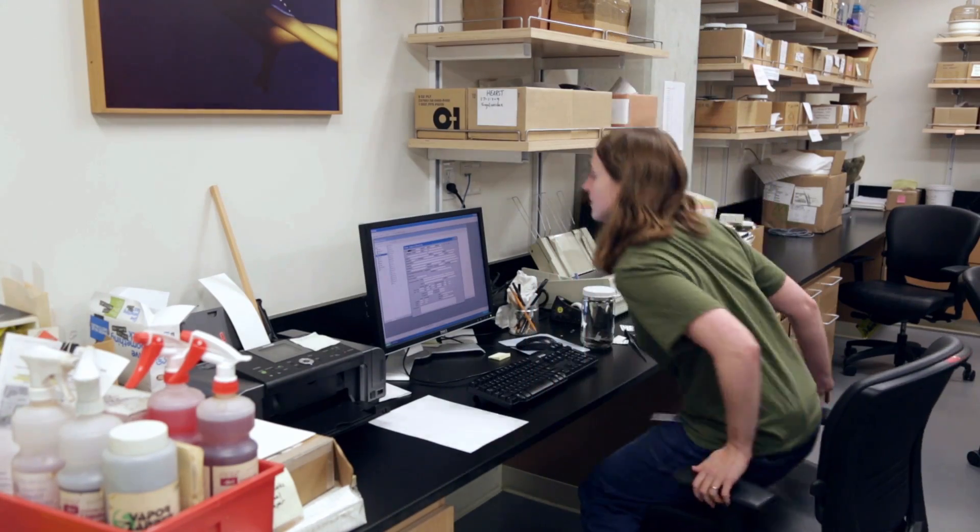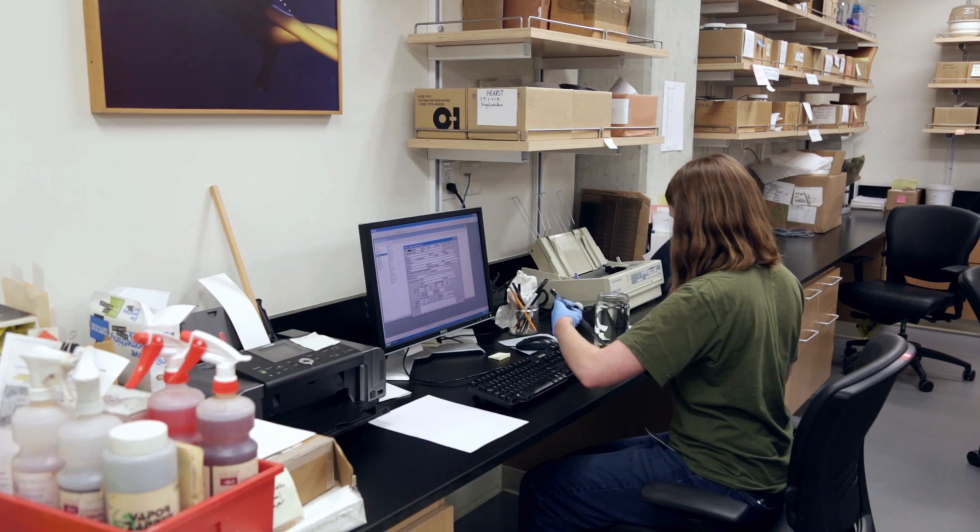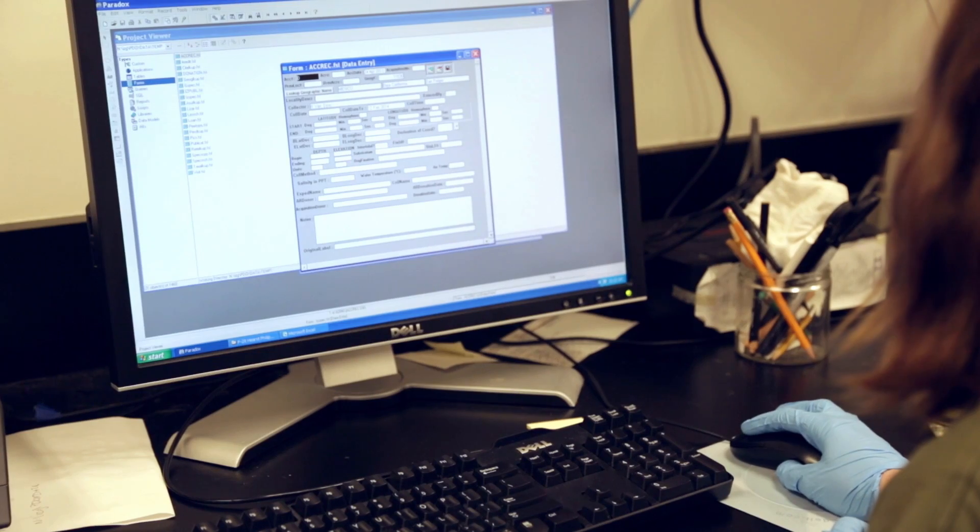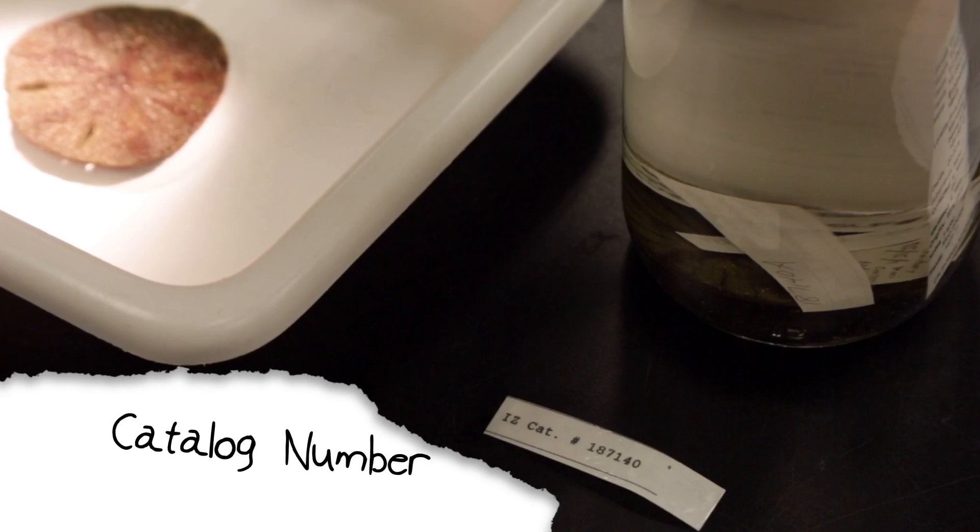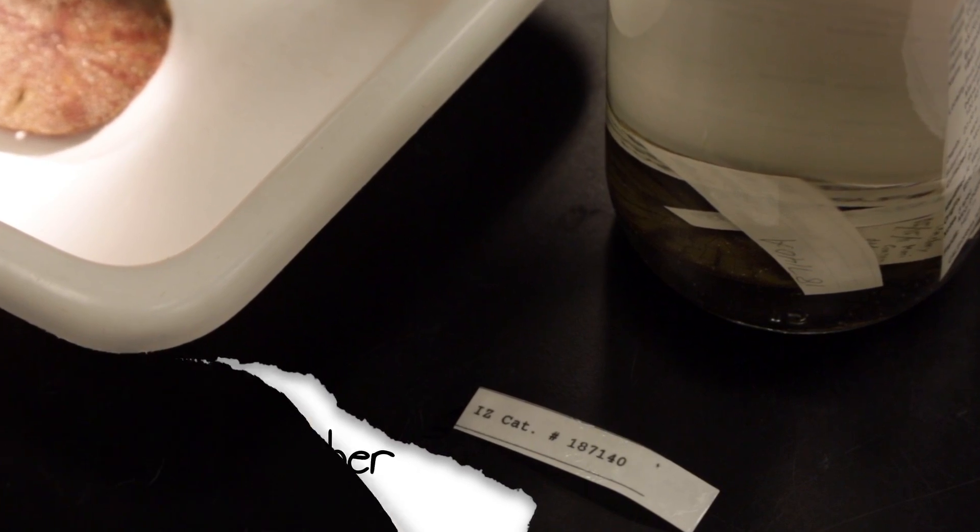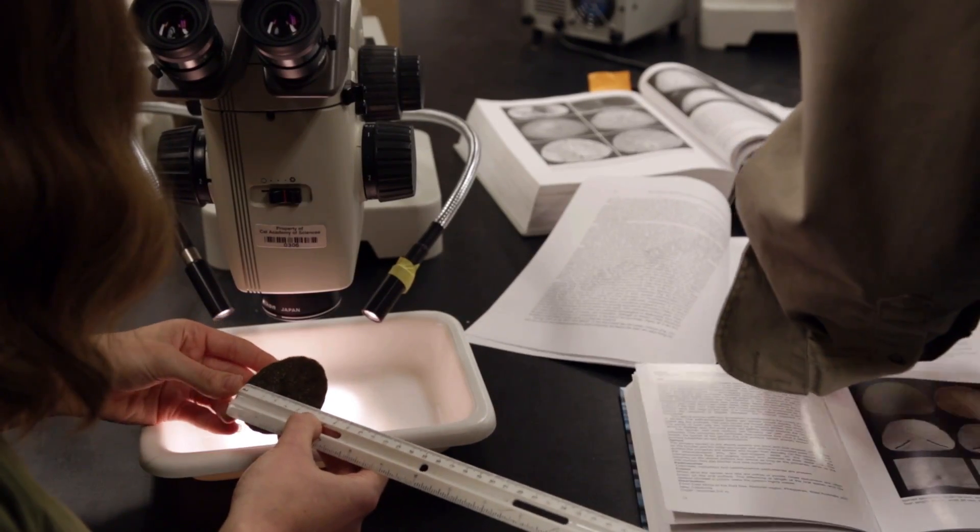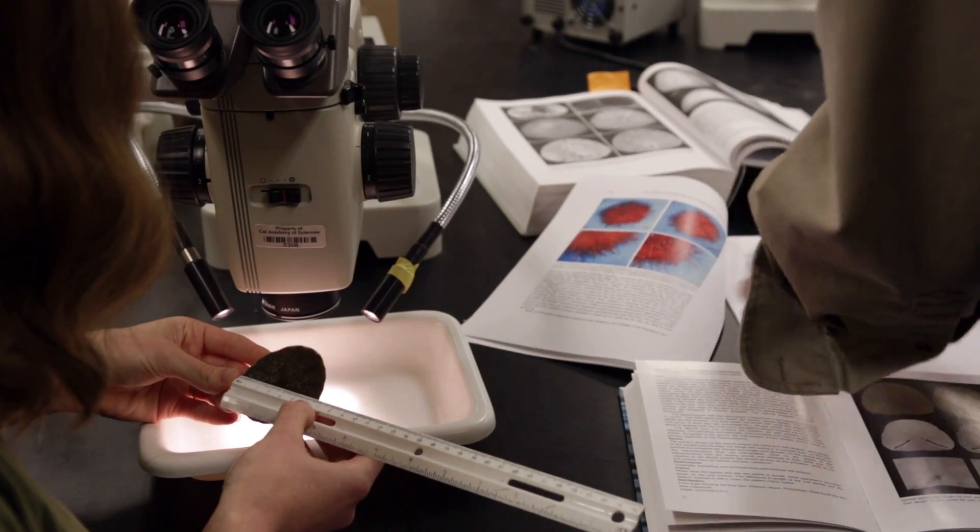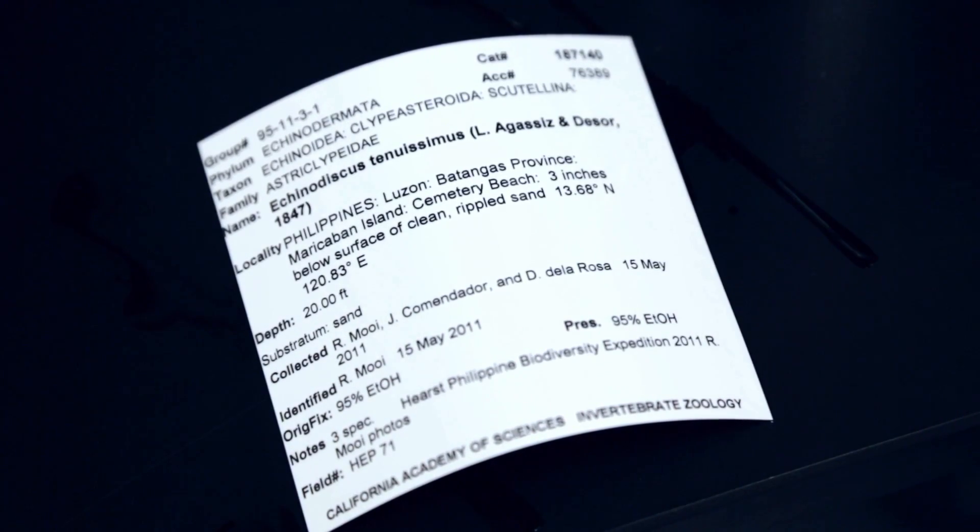Back at the lab, we need to start the process of cataloging the specimen. So we take Mr. Sandollar here and we attach information to the specimen through a unique number known as a catalog number. That catalog number is linked not just to the specimen on the shelf, but to what the specimen is, where it was found, any images taken in the field, and all of that wonderful metadata that are so crucial.